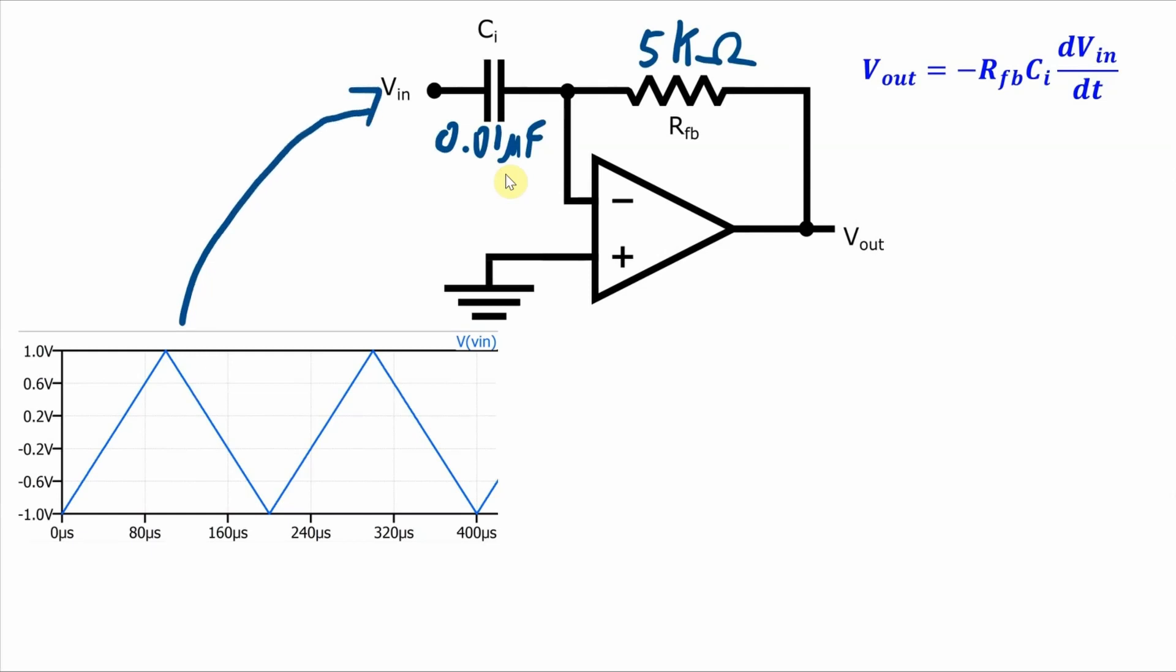And then let's say we apply this input signal here at Vin. We've got this triangle wave with a period of 200 microseconds or 0.2 milliseconds. So that means that its frequency is 5 kilohertz. Now let's use the equation to figure out what Vout will be.